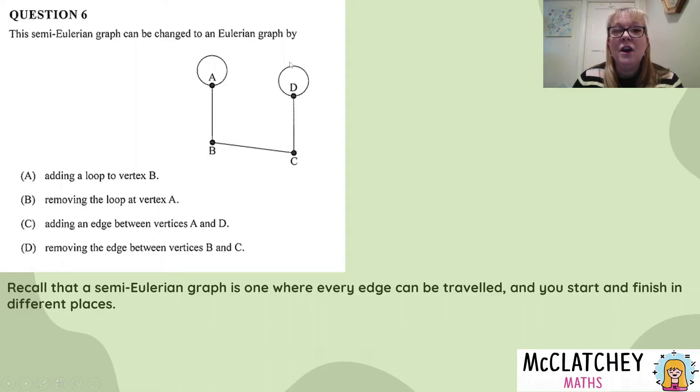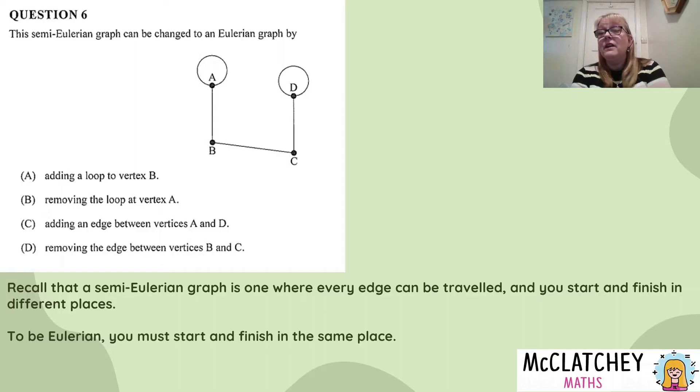around the loop again, and I've gone on every edge only once, and I have started and finished in different places. Now, what I'm trying to do is get it to an Eulerian graph, which means it must start and finish in the same place.